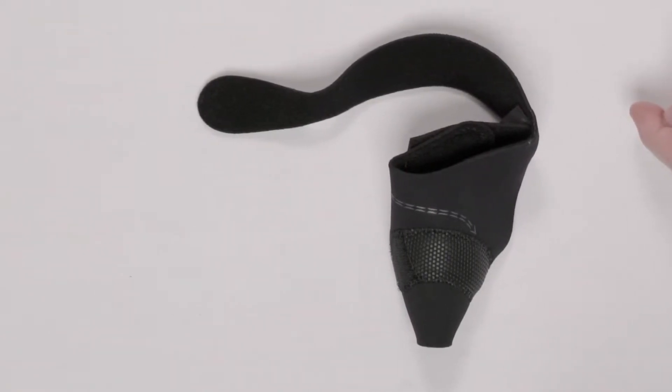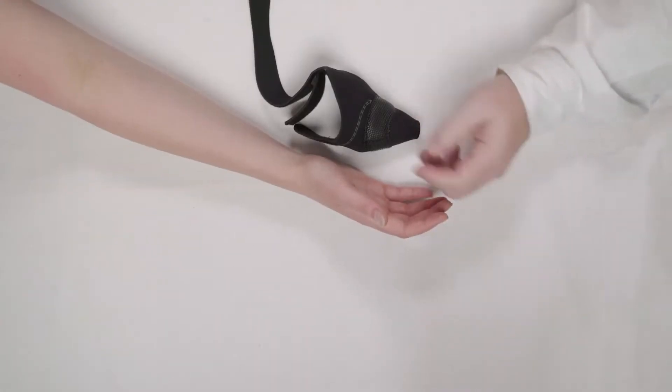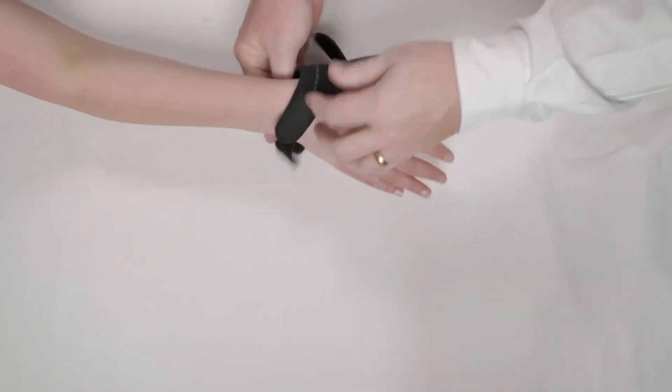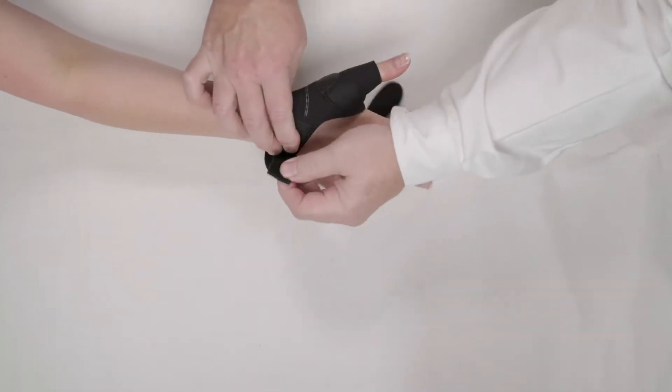Let me put it on you to show you how it works. The brace is simple to apply. We just slide it over the top of the thumb and secure it at the wrist with this really unique patient assist strap.